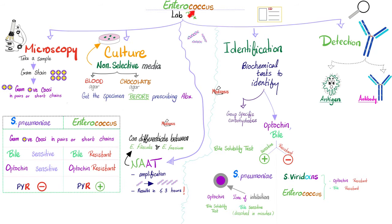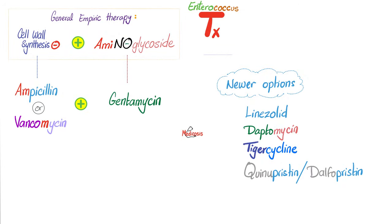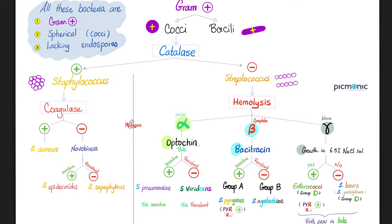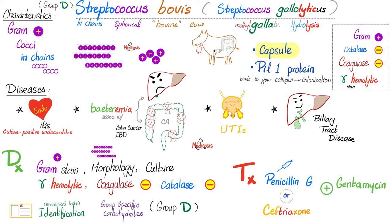Here is how we diagnose Enterococcus. Make sure to understand the difference between Enterococcus and Pneumococcus, because they can look very similar under the microscope. Management of Enterococcus: cell wall synthesis inhibitor plus an aminoglycoside — for example, ampicillin plus gentamicin. If we have resistant organisms, we have newer options. Now let's talk about Streptococcus bovis — grows in bile but not in salt.